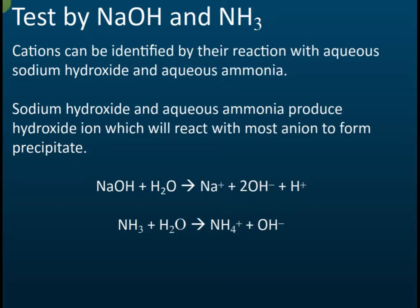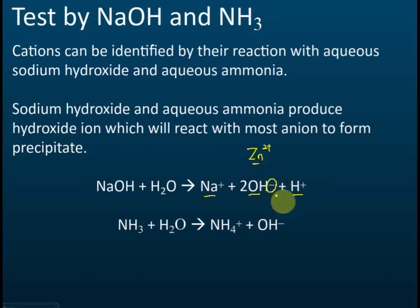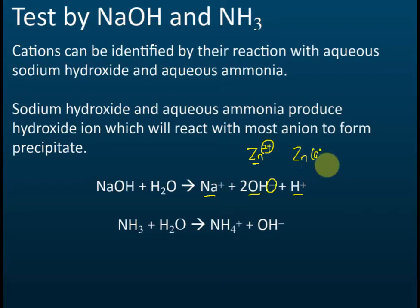Let's say the solution contains zinc ions. Out of those three ions, which one may react with zinc ions? The hydroxide — because hydroxide carries a negative charge, and the zinc ion, the positive ion, carries a positive charge. Opposite charges attract each other, so zinc will react with hydroxide to form zinc hydroxide.